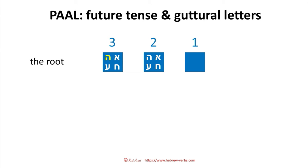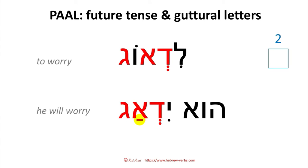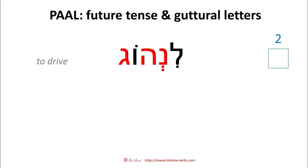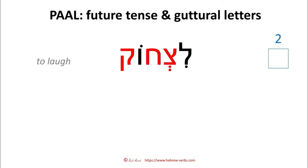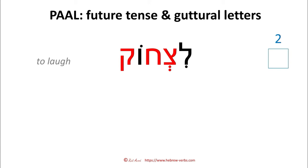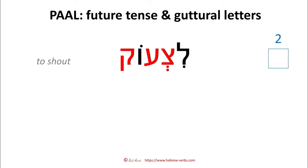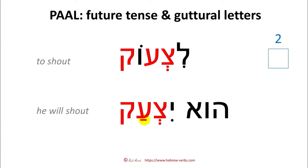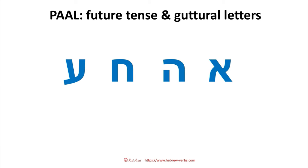For example: LID'AG — to worry — has Alef on the second root position. That's why I put the number two here. HU YID'AG, ANI ED'AG. With Hei, the same: LINHOG — HU YINHAG, ANI ENHAG. LITZChOK — to laugh — has Chet on the second root position: HU YITZChAK, ANI ETZChAK — I will laugh. And the last one: LITZChOK — with Ayin — to shout: HU YITZChAK, ANI ETZChAK. You see, this is not EFOL, and the reason is that we have one of those guttural letters on the second root position.